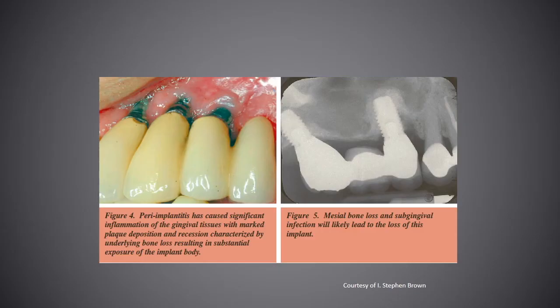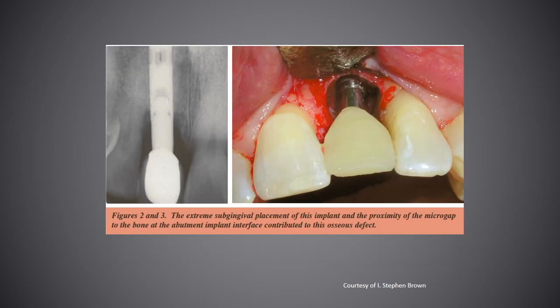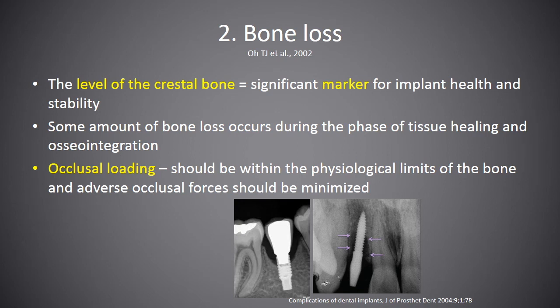Another example of a biological complication is bone loss. The level of the crestal bone is a significant marker for implant health and stability. Bone loss may occur secondary to excessive occlusal loading or bacteria. After dental implant surgery, some amount of bone loss occurs during the phase of tissue healing and osseointegration. To avoid bone loss, occlusal loading should be within the physiological limits of the bone and adverse occlusal forces should be minimised.